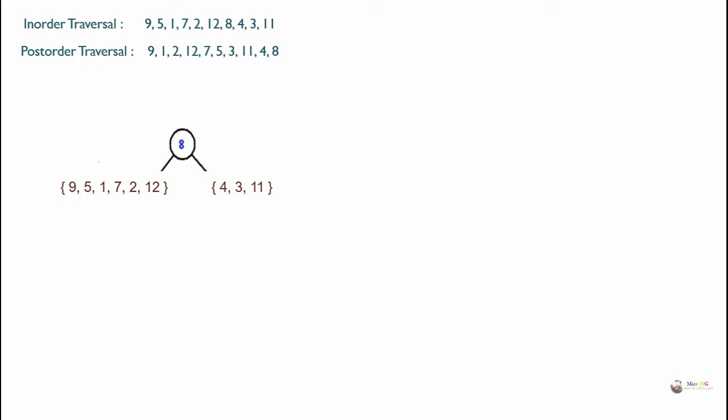Now look at the left subtree elements: 9, 5, 1, 7, 2, and 12. Out of these, which element appears first from the end of post-order traversal? We always look from the end of post-order traversal. Out of these elements 9, 5, 1, 7, 2, and 12, we can see that the element coming first from the end is 5.